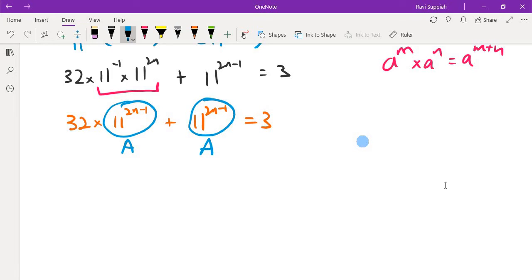I can say that 32a plus a equals 3. Now 32a plus a equals 33a equals 3, because a represents the term 11^(2n-1) which is common to both.